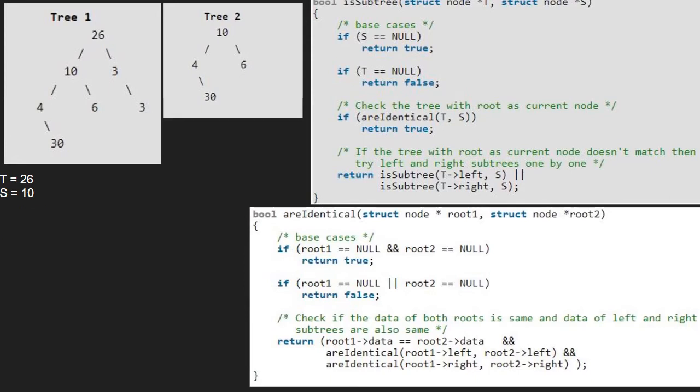Now, we try left and right subtrees one by one. So, first we pass the left child of 26 which is 10 along with S which is 10. Since both are not null, we call the areIdentical function with T and S. Now root1 will point to 10 and root2 will also point to 10.